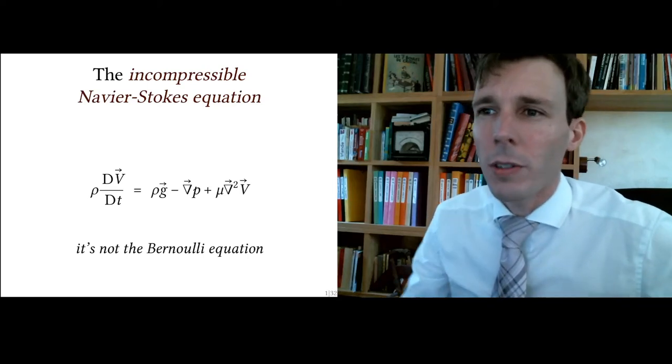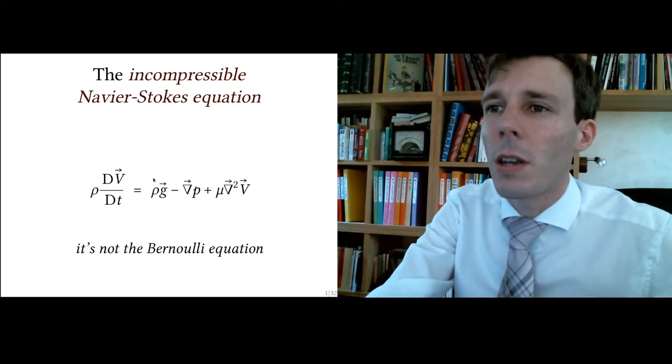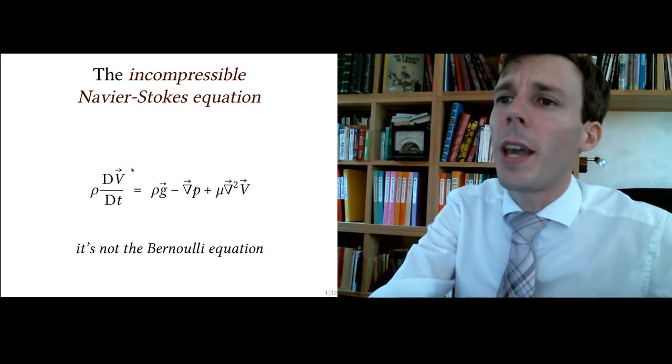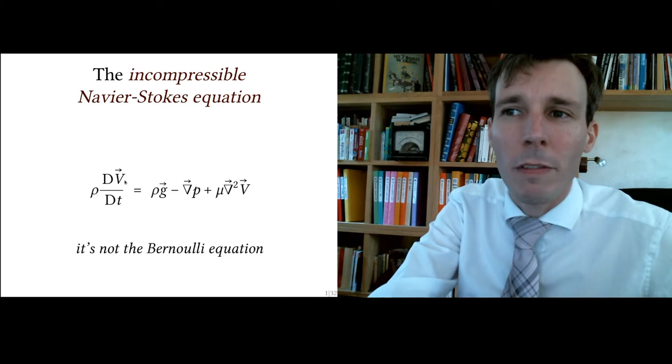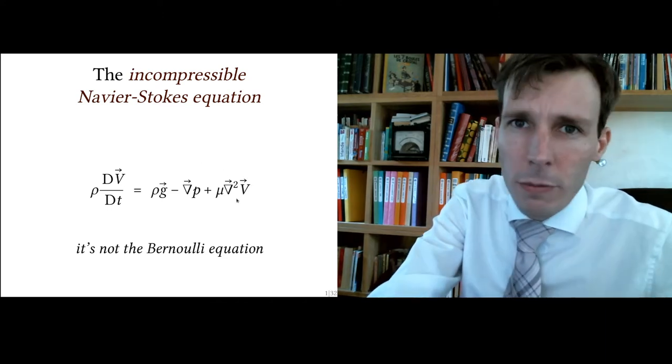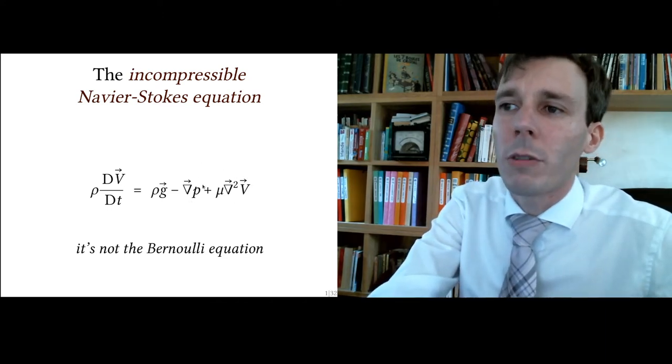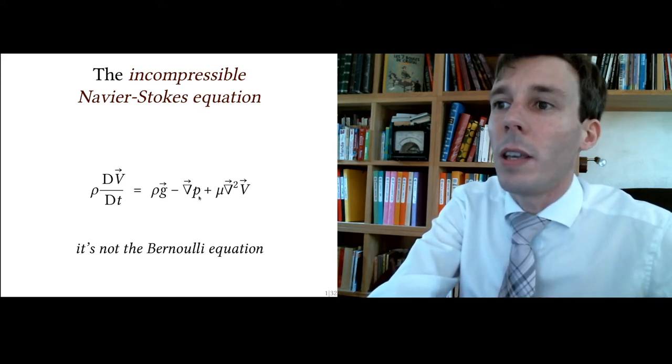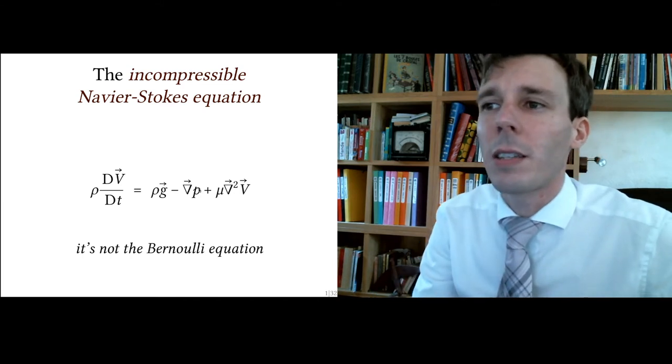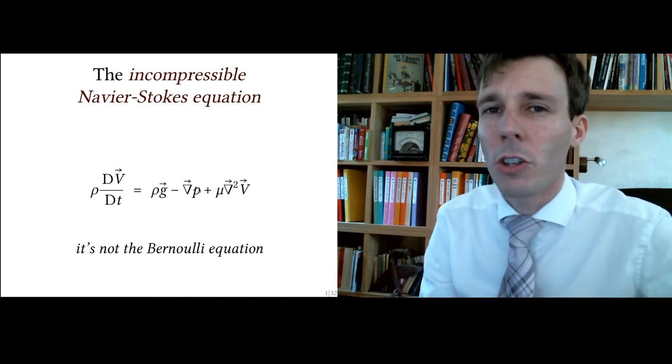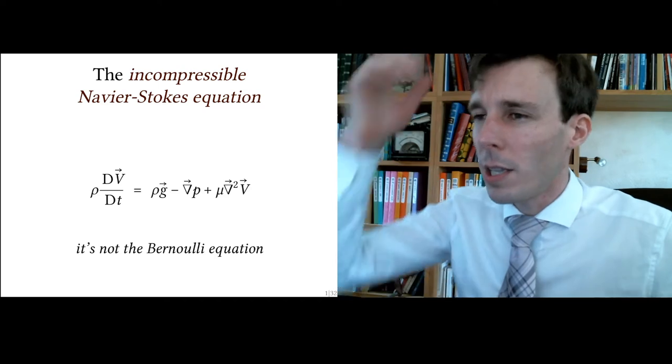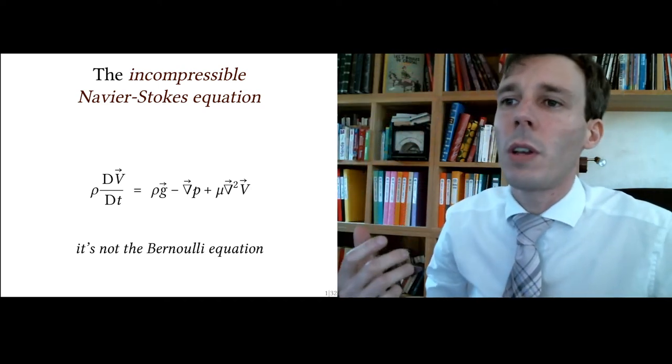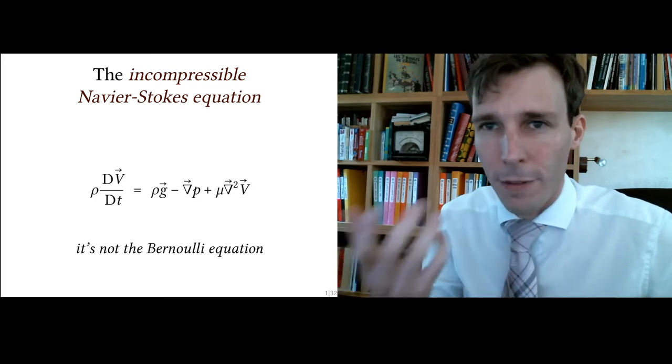One weakness of the Navier-Stokes equation is that it presents us the problem of finding the velocity field V, and it expresses this change in time of this velocity field as a function of V itself, but it also has terms for pressure. This term for pressure is a gradient, a change in space of pressure, and tells us nothing about how pressure should change in time. So in itself, the Navier-Stokes equation is not enough to be able to find the velocity field V.